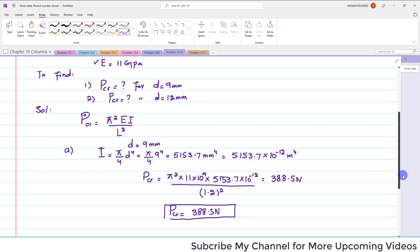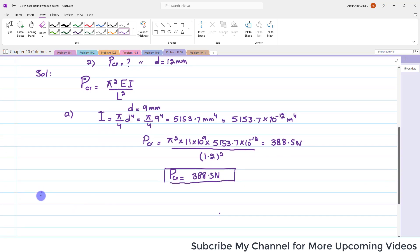Now we will move toward part B. And again, for diameter of 12 mm we have to find I. And again, I is equal to pi by 4 d to the fourth. So pi is 3.1417 divided by 4 multiplied by d is 12 to the power 4.